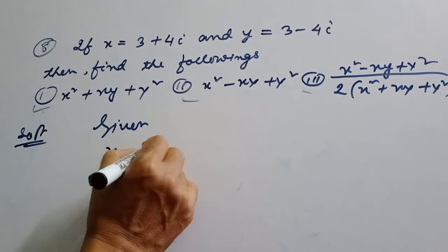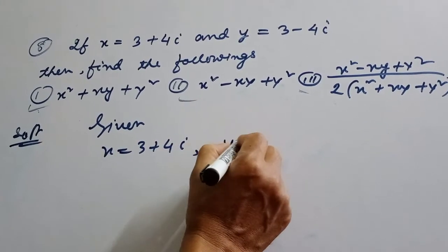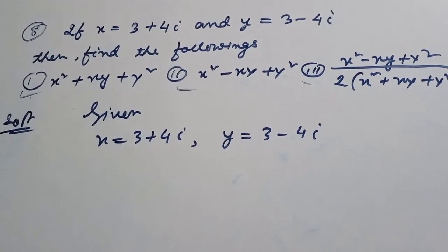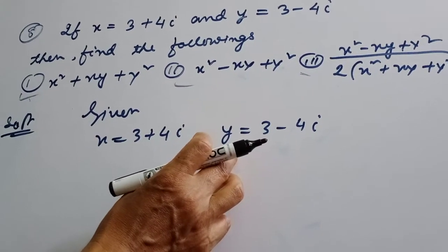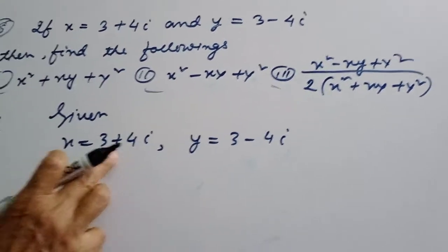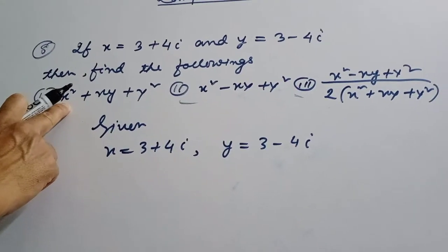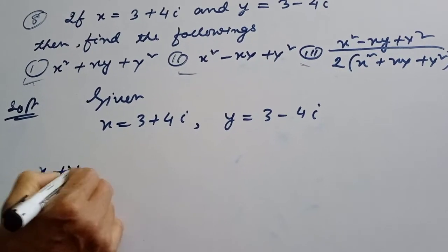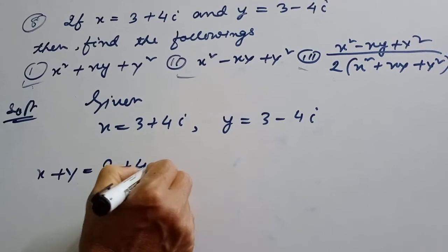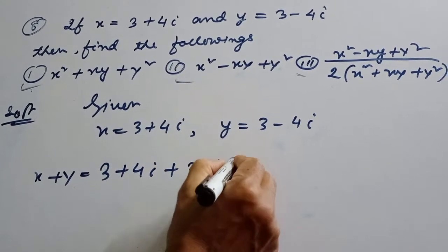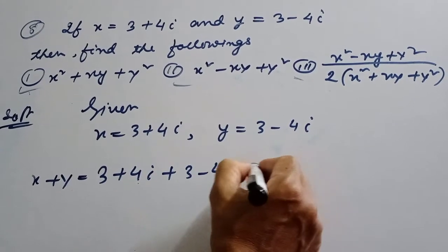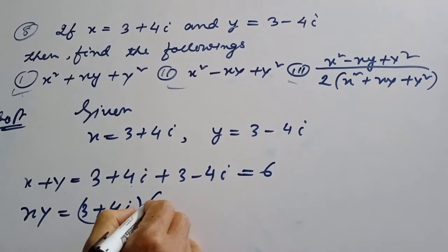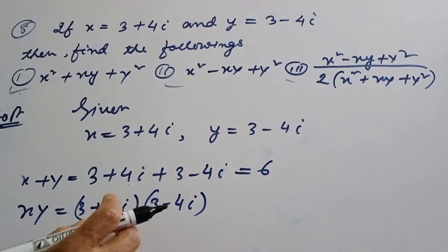This is equal to: x is equal to 3 plus 4i and y is equal to 3 minus 4i. Therefore x plus y — if you keep your primary values — x plus y will be: x plus y equals 3 plus 4i plus 3 minus 4i. The imaginary parts cancel, so t plus t equals 6. And x times y equals (t plus 4i)(t minus 4i), which is an a plus b, a minus b identity.